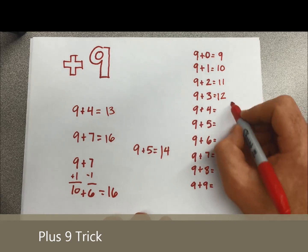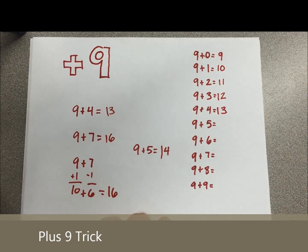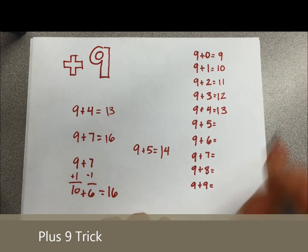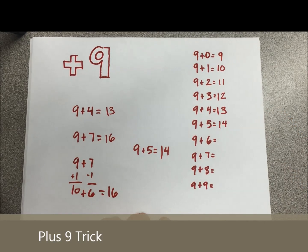9 plus 4, drop down from 4 to 3, slap a 1 in front, 13. 9 plus 5, try this one in your head, I'll give you about 5 seconds. Hopefully you dropped the 5 down to a 4, slap a 1 in front, and your answer is 14.